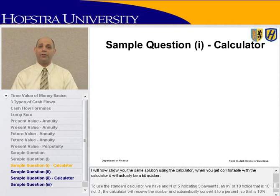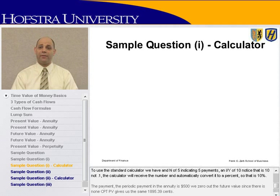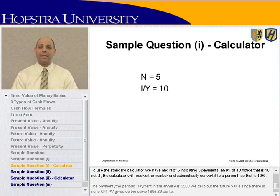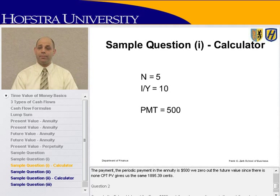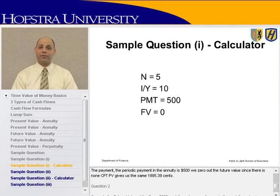I will now show you the same solution using the calculator. To use the standard calculator, we have N equals 5, indicating five payments; IY equals 10 — notice that's 10, not 0.1, as the calculator automatically converts it to a percent. The payment is $500, we zero out the future value, and compute present value gives us the same $1,895.39.